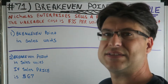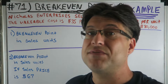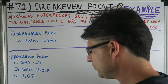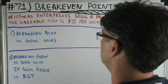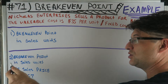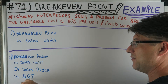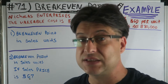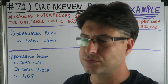We're doing a break-even point example. We've been talking about break-even point — what is break-even point? It's when your revenue equals your cost. The first question is we're going to find the break-even point in sales units, and the second question we're going to find the break-even point in sales units but change the sales price to $67. In the first example the sales price is $60.